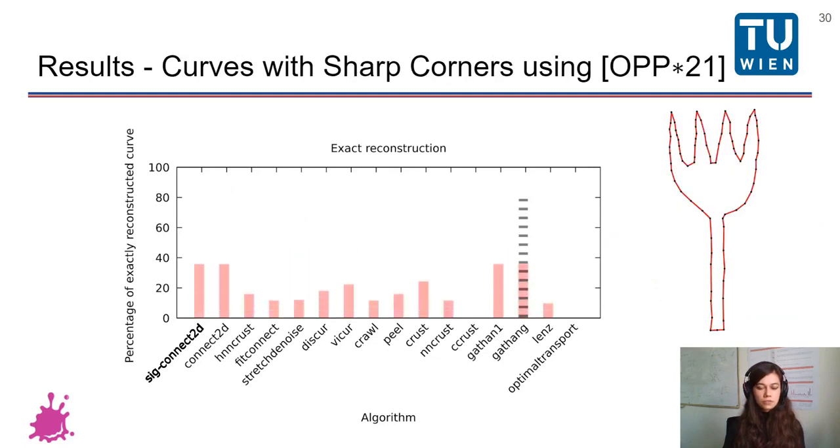And we also have results for the sharp corners. The best method is once again highlighted with stripes, and that is GATG, which is a method specialized in reconstruction of curves with sharp corners.